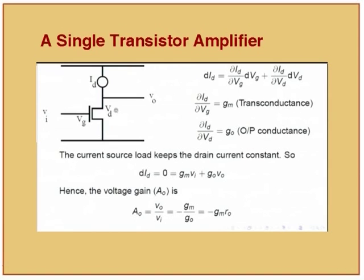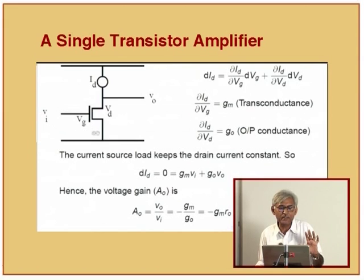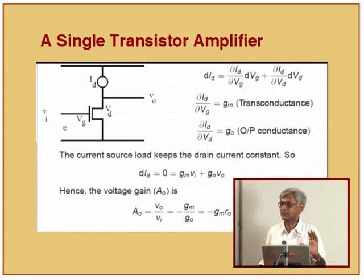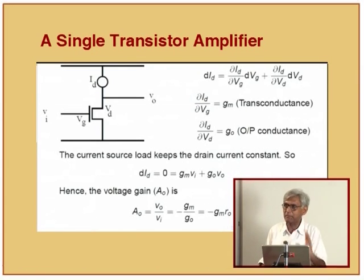I don't assume any knowledge on your part for analog design. Let us start from basics and find out what we actually mean by an analog amplifier. I take a transistor here, but I actually do not need it to be simple - any linear operation circuit can be placed here, as long as we have ways of characterizing its current-voltage characteristics. Later we will put a cascode or differential amplifier here; all of them follow essentially the same relationship.